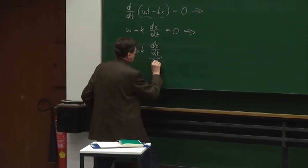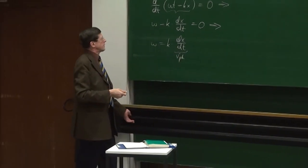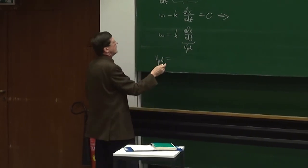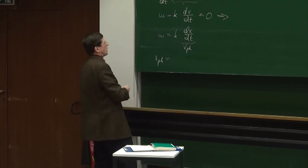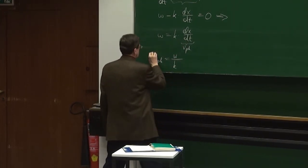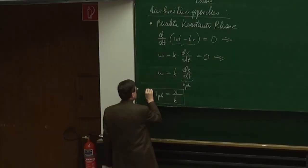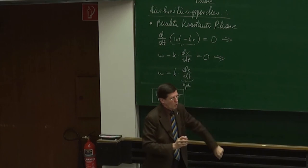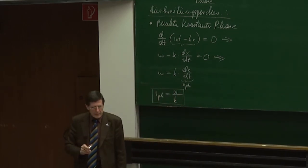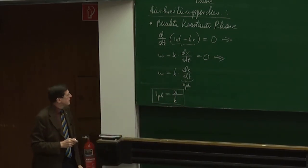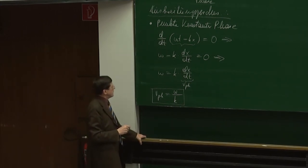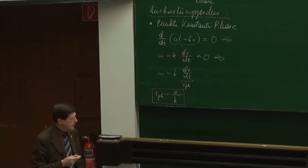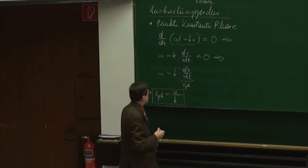Dieses dx/dt ist gerade die Ausbreitungsgeschwindigkeit derjenigen Punkte, wo die Phase konstant ist. Das nennen wir die Phasengeschwindigkeit. Und daraus ergibt sich, die Phasengeschwindigkeit ist gleich ω durch k. Also aus dieser Darstellung sehen Sie auch, warum dort das Minus steht, damit sich das eben so darstellen lässt.